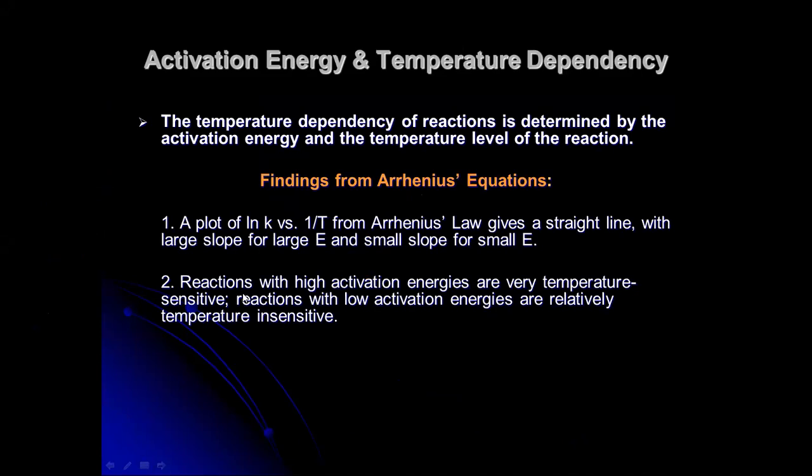Number one: if you're going to have a plot of ln of k versus one over T from our Arrhenius law, it gives a straight line with a large slope for large E and a small slope for small E. I think you have seen it already, and I have mentioned it also, that you will have a large slope for this line for high activation energy; otherwise, it will have a small slope.